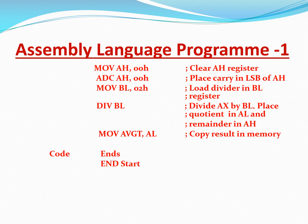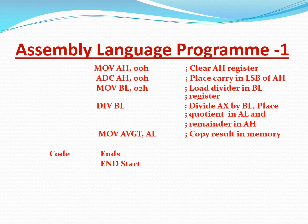DIV BL means: divide AX by BL, place the quotient in AL and the remainder in AH — similar to how we previously used the MUL multiply instruction. Then 'MOV AVGT, AL' — that is, copy the result which is in AL (the quotient) into the AVGT location in the data segment of memory. And here we write 'CODE ENDS' — that is the end of the code segment.